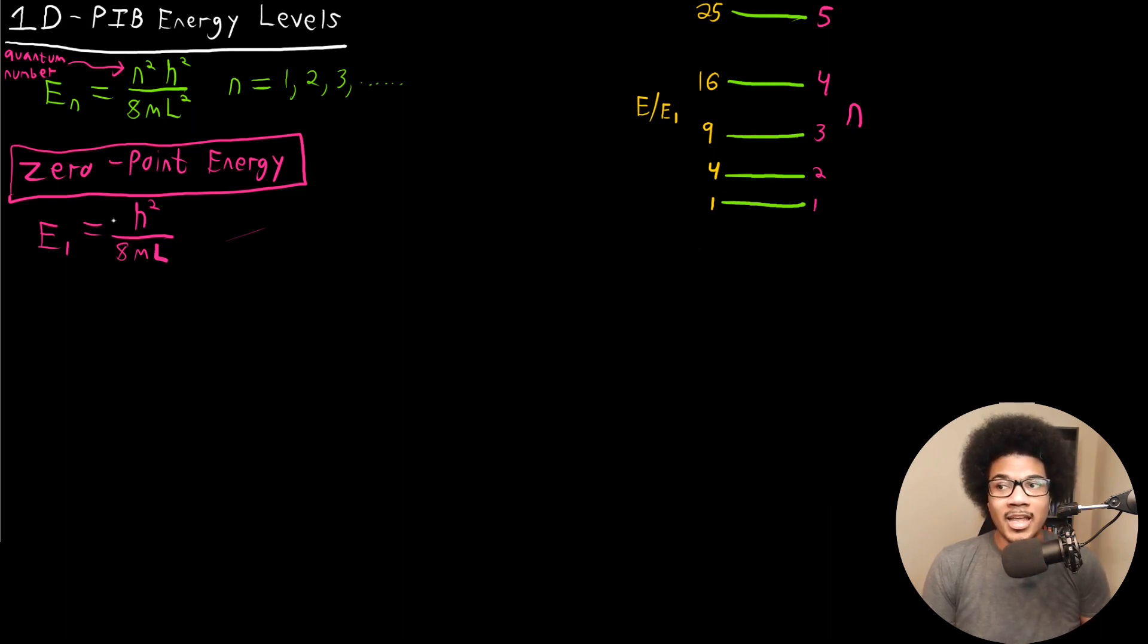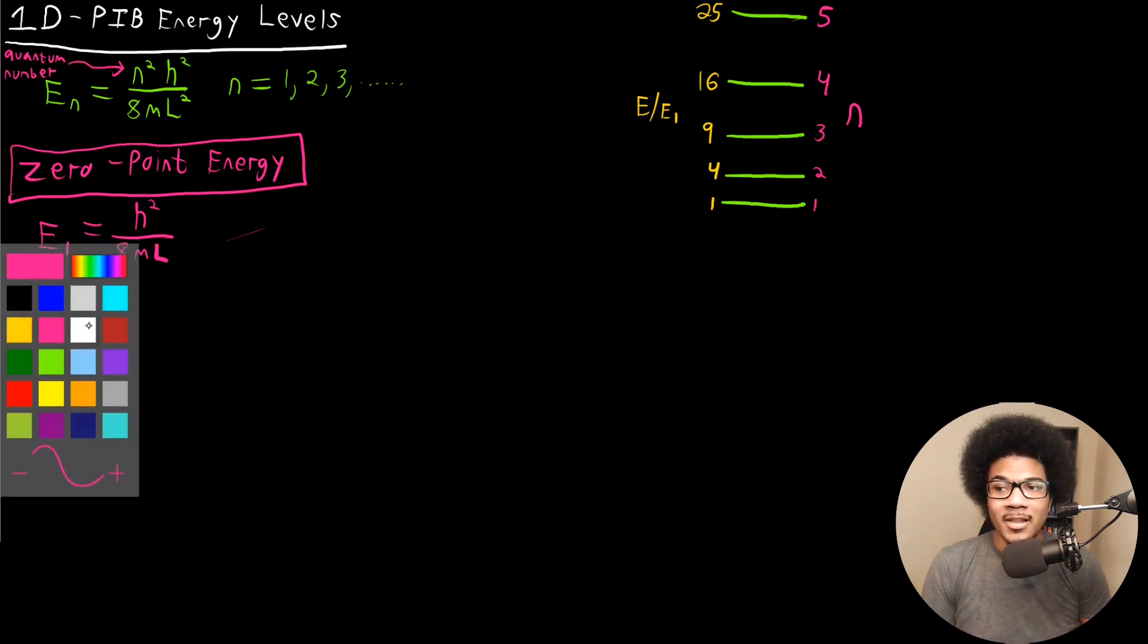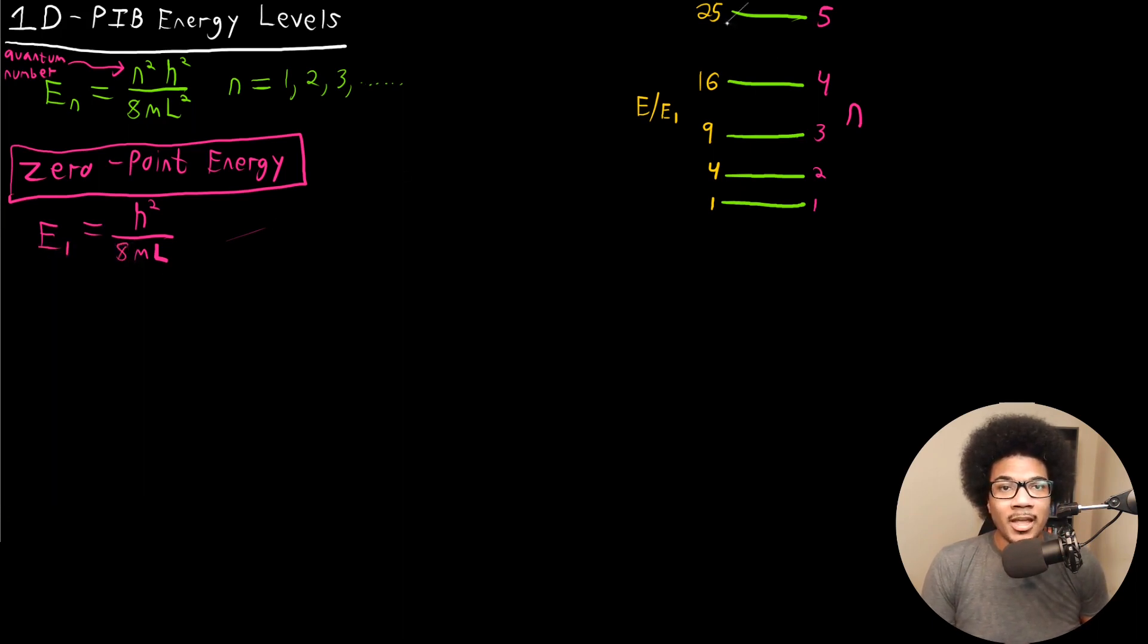What you notice here, again, different from classical mechanics. In classical mechanics, everything in between here would be allowed. What I've shaded in in the white, this would be the classically allowed region.